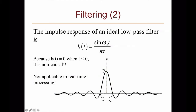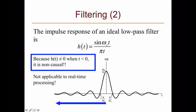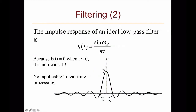However, the impulse response of an ideal low-pass filter is h(t) = sinc(ωc·t / πt), also called a sinc function — a sinc-shaped signal scaled by time. Because h(t) is not zero for t < 0, this system is non-causal, making it not applicable to real-time processing. The design of practical filters will be covered in advanced courses like digital signal processing.